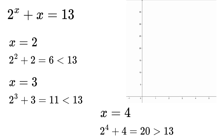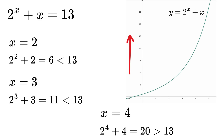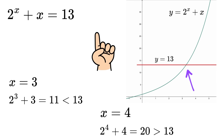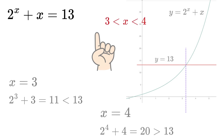If we plot this function 2 raised to x plus x, we get this curve. And as you can see, it is an increasing function — the value of this function increases as x increases. Now if you draw a horizontal line at y equals 13, we can see that both graphs intersect at only one point. So there is only one real solution to our question, and our answer will lie somewhere between 3 and 4.